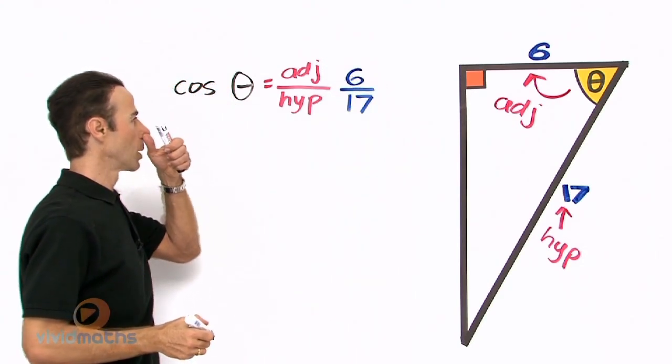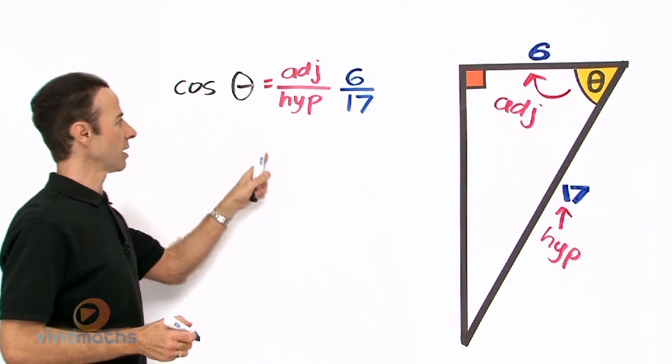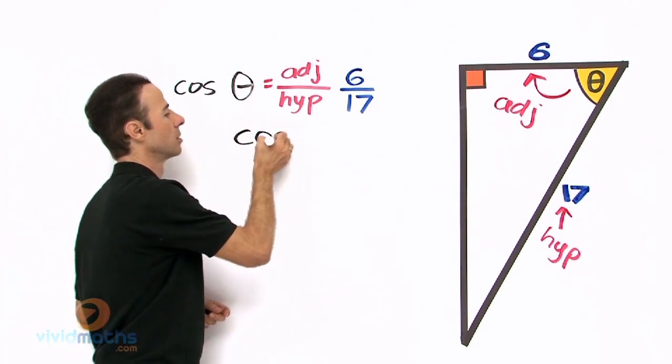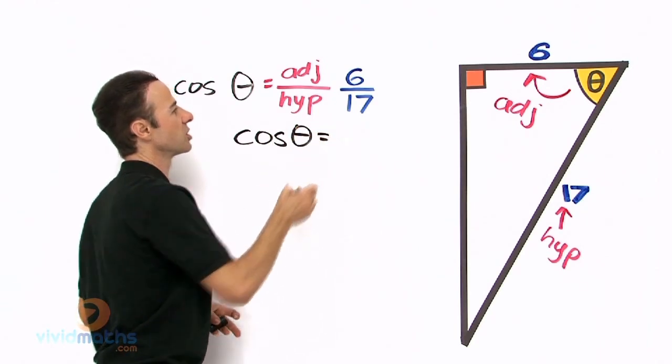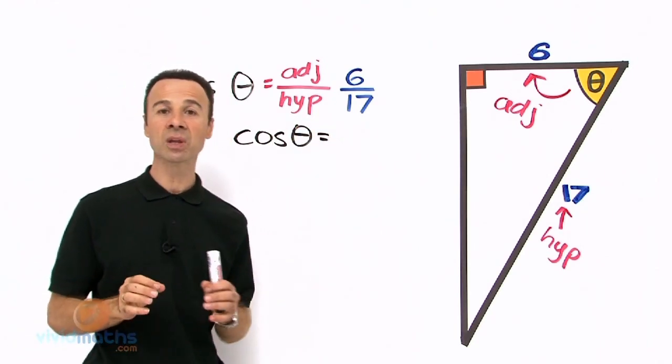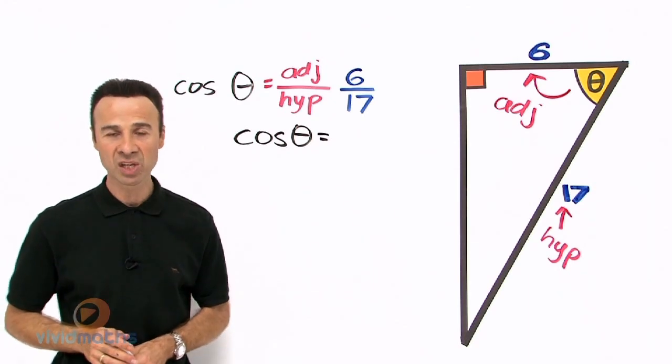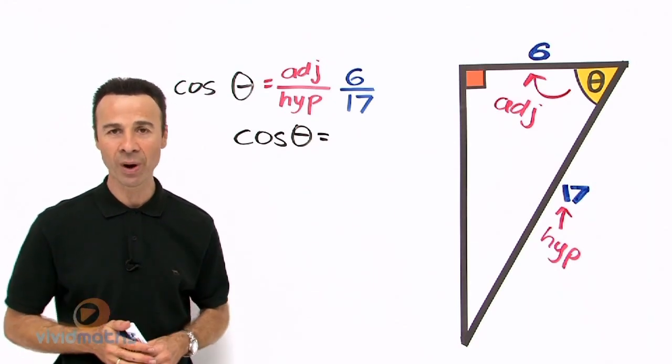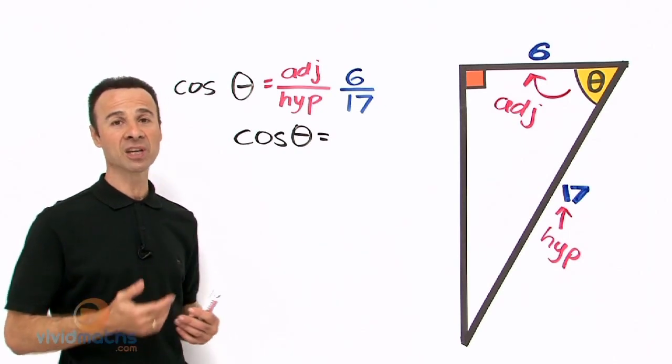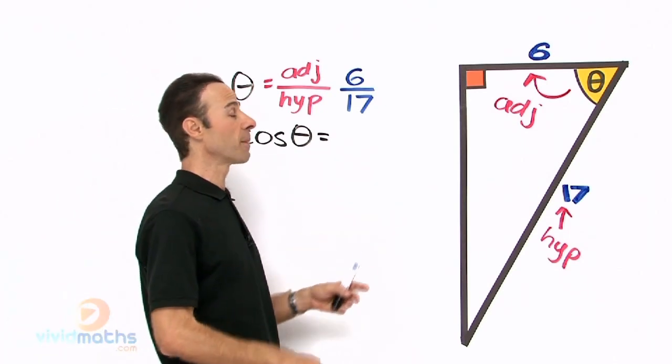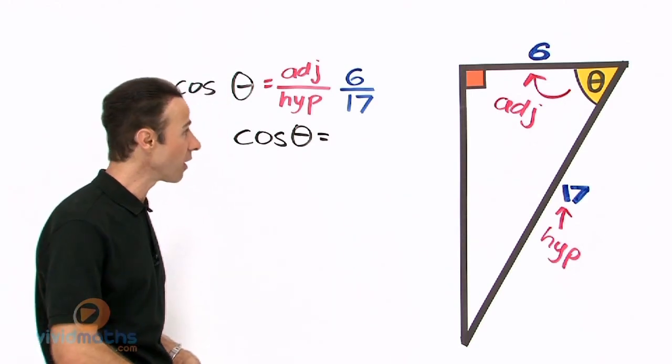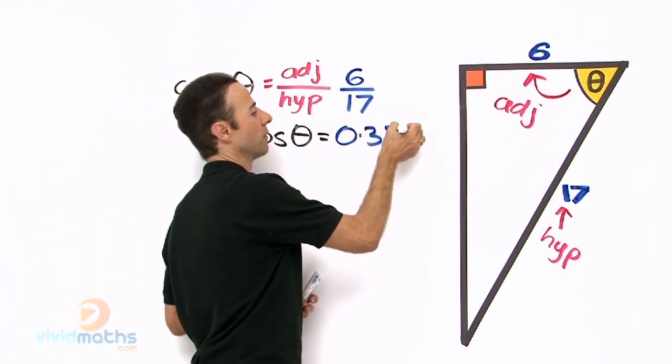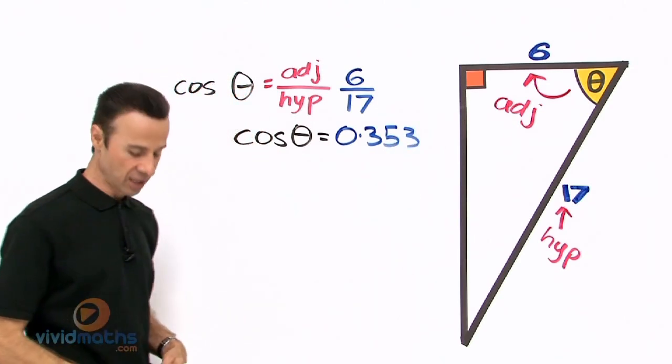Now let's bring it down there. So we can say cos theta equals—now 6 divided by 17 on the calculator will give you a decimal. I like working with decimals. Some people like to leave it as fraction form in the calculator. You're welcome to do it either way, either option works. I prefer decimals. In this example we're going to do decimals.